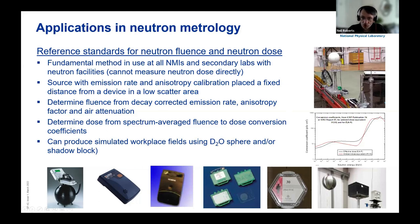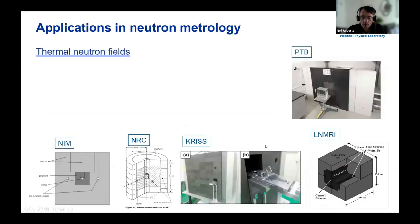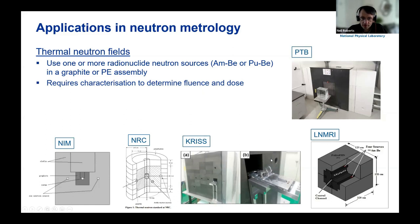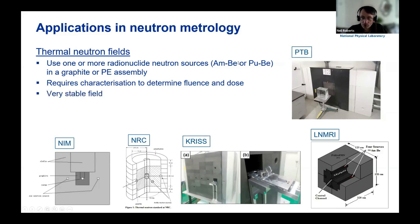These sources can also be used to produce a simulated workplace field — either by surrounding a source with a sphere of heavy water to moderate neutrons, or placing a shadow block so you're looking at only the scattered neutron energy spectrum. Another application at many metrology labs is creating a thermal neutron field using radionuclide sources — using one or more americium-beryllium or plutonium-beryllium sources in a graphite or polythene assembly to moderate neutrons. It's a very stable field because it relies on sources with half-lives of 100 years or more, though it does give a quite low intensity field.